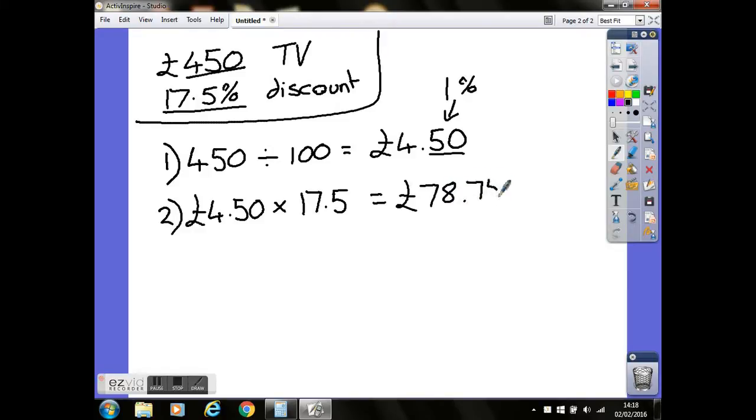Now just take a quick note here: after the decimal point you've already got two numbers, that means you don't have to add on the zero on the end. It just stays those two numbers.